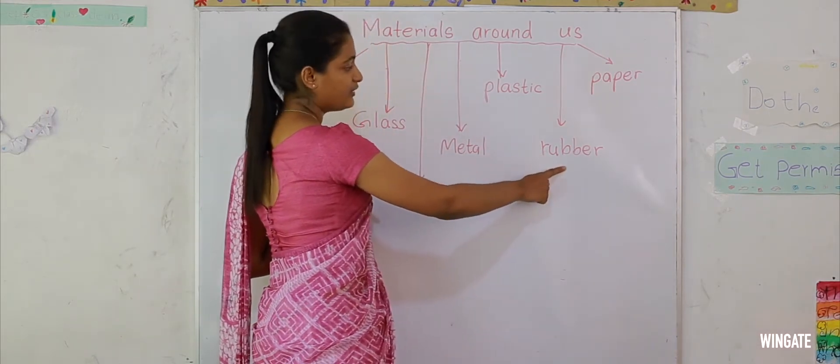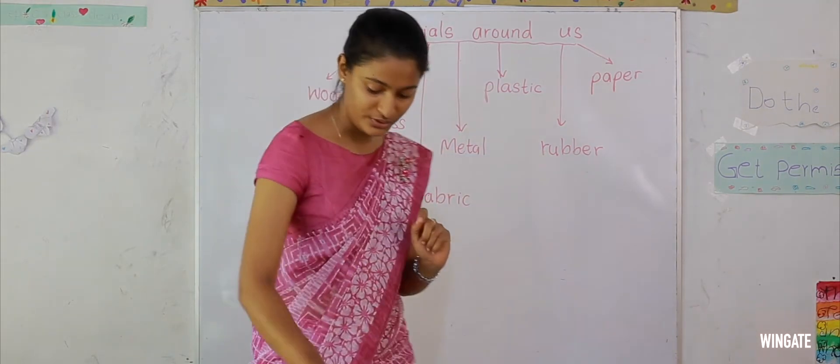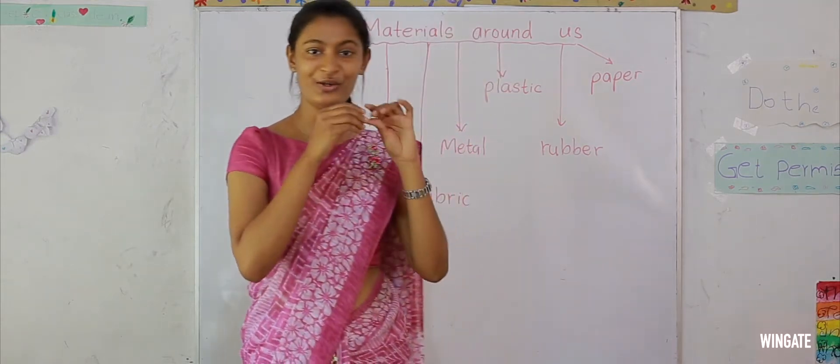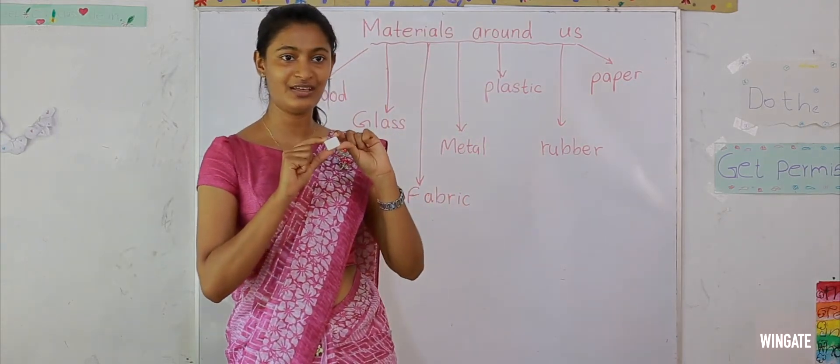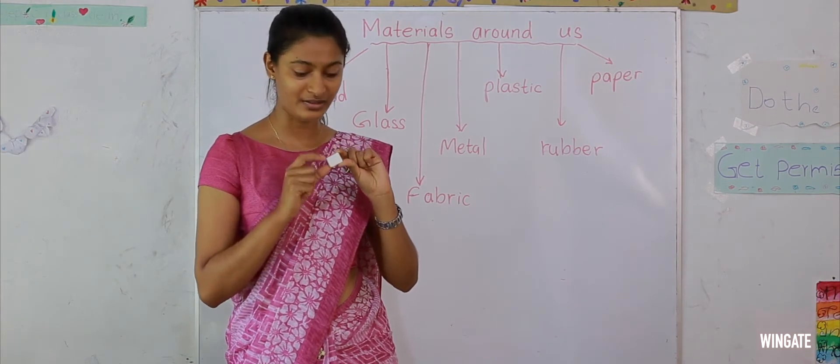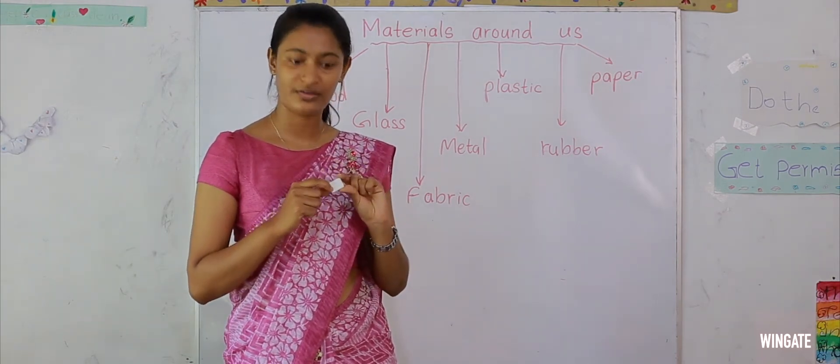Let's move on to next. Rubber. Rubber is used to make your eraser. Can you see? You all have erasers. So erasers are made of rubber.